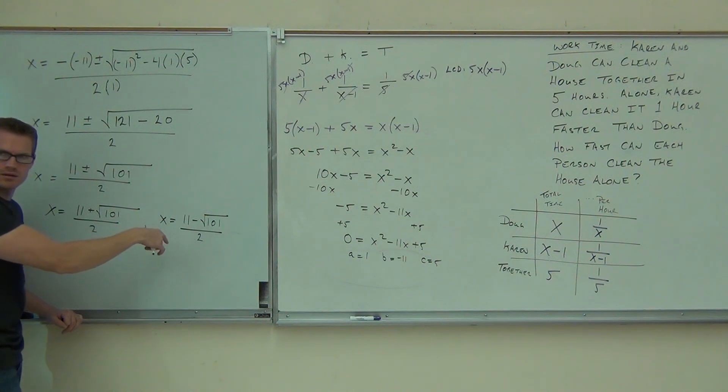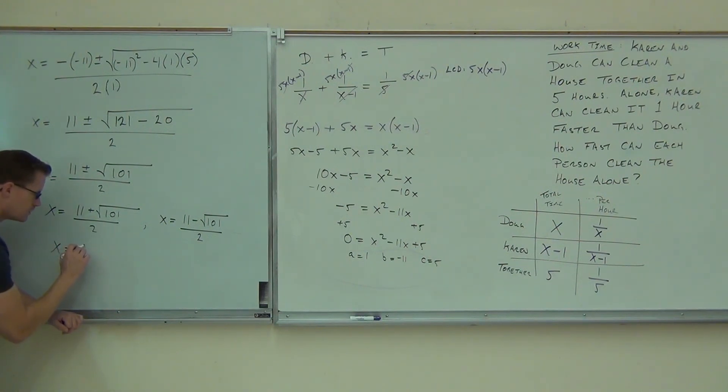Have you done this on your calculator yet? Well, do that. As soon as you get 11 plus square root of 101 over 2, tell me what it is, please. 10.52. Wait, this one? No, everything together once you do it. Because that's going to be like 10 point something and then plus the 11. 10.52?